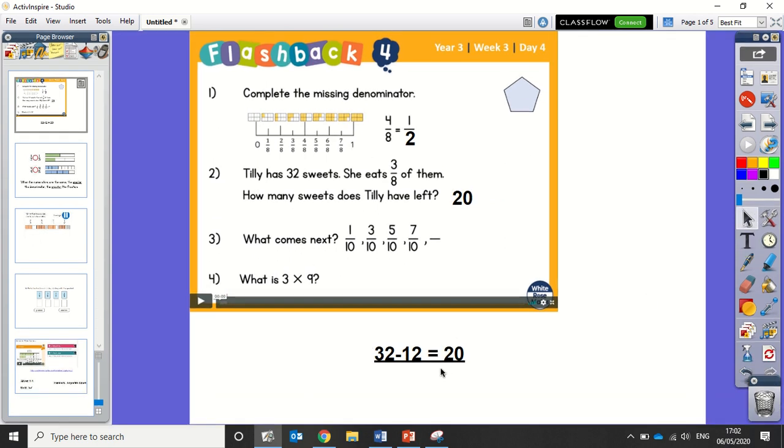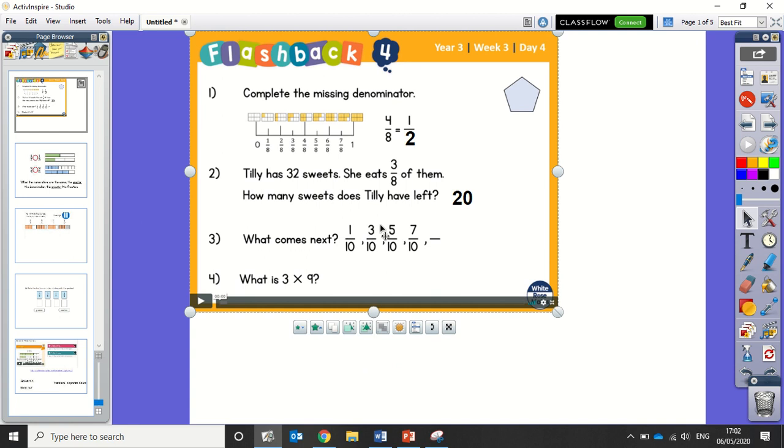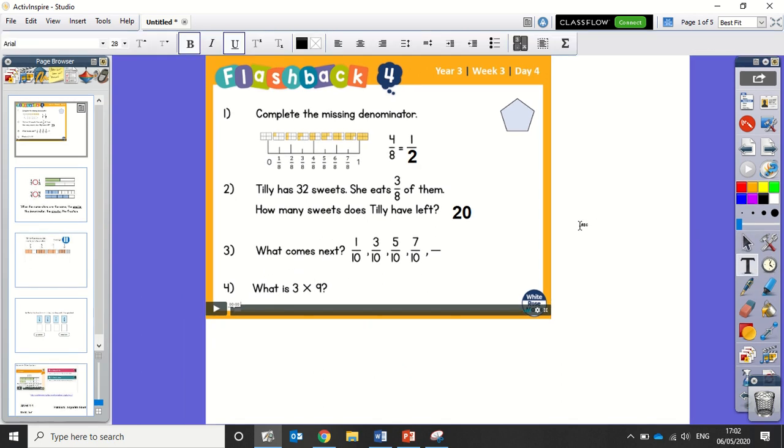The next one, what comes next? We've got 1 tenth, 3 tenths, 5 tenths, 7 tenths. Each time we're going up by 2, so 1, 3, 5, 7, 9. My next one is 9 tenths.